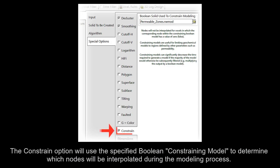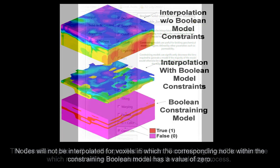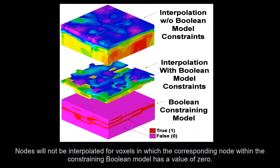The constraint option will use the specified Boolean constraining model to determine which nodes will be interpolated during the modeling process. Nodes will not be interpolated for voxels in which the corresponding node within the constraining Boolean model has a value of zero.